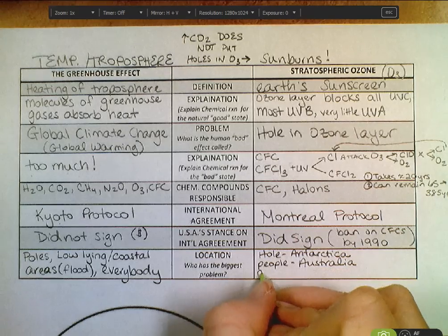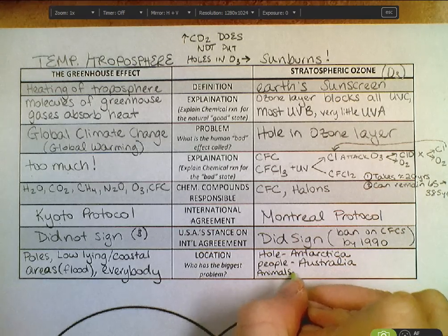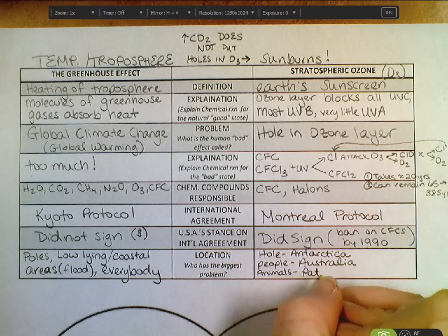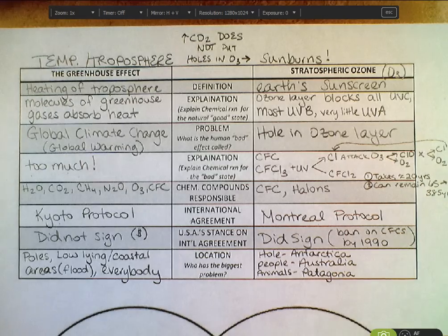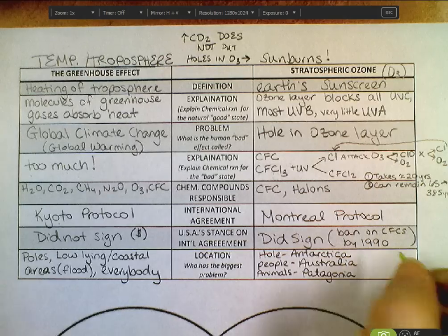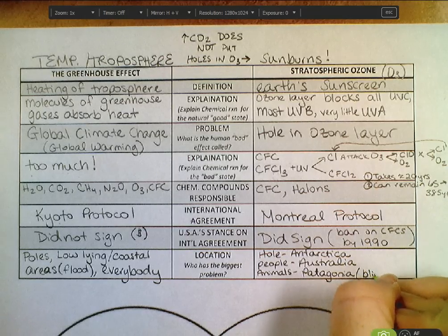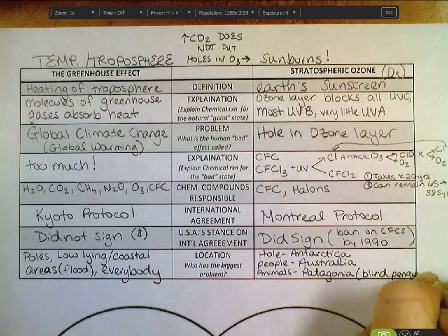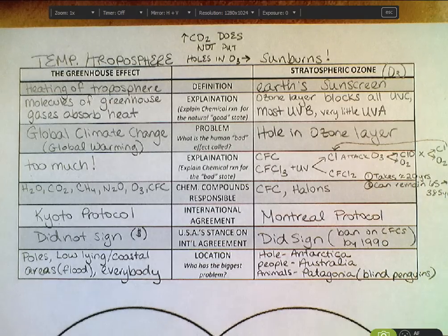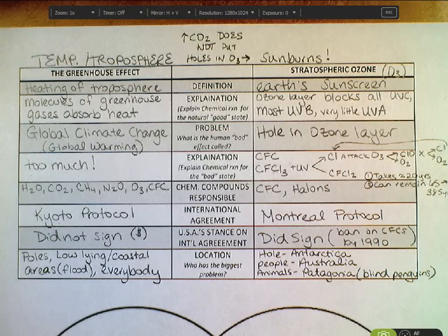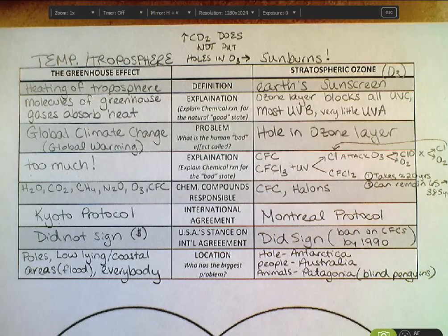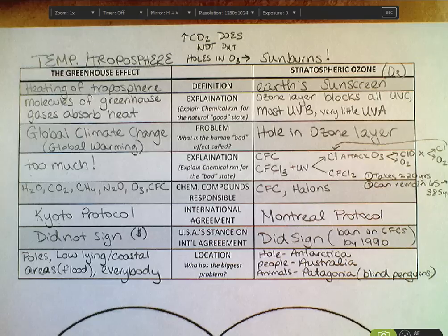One of the earliest things we saw with this in animals was in Patagonia — blind penguins living there because they're exposed to more UV radiation. Animals have fur so they're not as likely to get skin cancer like we are, but their eyes are not blocked by anything. Sunglasses actually help prevent blindness and cataracts caused by that extra UV radiation.